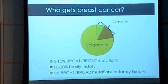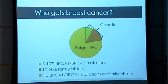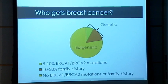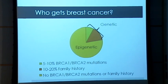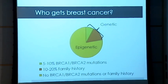Epigenetics affect all aspects of our lives and all of our processes. As an example with breast cancer: only 5 to 7 percent of women who have breast cancer have a BRCA1 or BRCA2 mutation, and 10 to 20 percent have a family history of breast cancer. Those together are what we'd call genetic reasons for having cancer. However, the remaining 80 percent has no BRCA1 or BRCA2 mutations or family history — this is all attributed to epigenetic problems. This is the scope of the issue we're trying to learn more about.